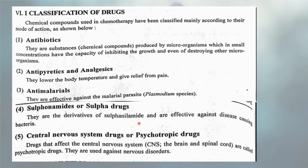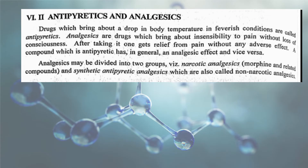The first type of drugs to study are antipyretics and analgesics. Drugs which bring about a drop in body temperature in feverish conditions are called antipyretics. Analgesics are drugs which bring about insensibility to pain without loss of consciousness. Analgesics may be divided into two groups: narcotic analgesics and synthetic antipyretic analgesics. Notably, analgesics can have an antipyretic action and vice versa.